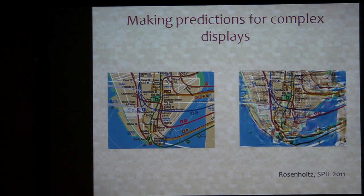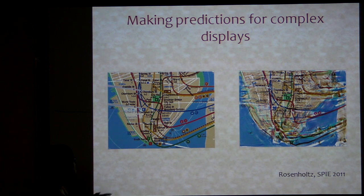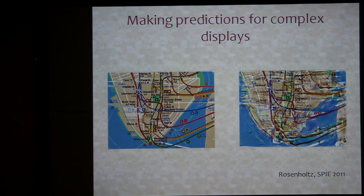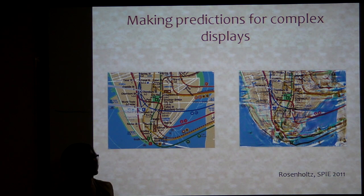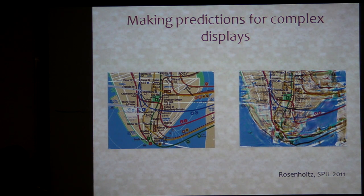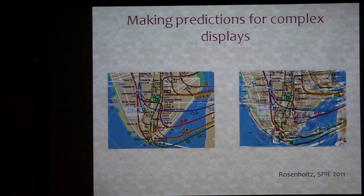We're definitely still getting some artifacts, but it's good enough to get some indication of the predicted information available even in complex scenes.